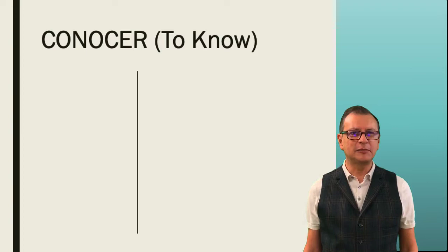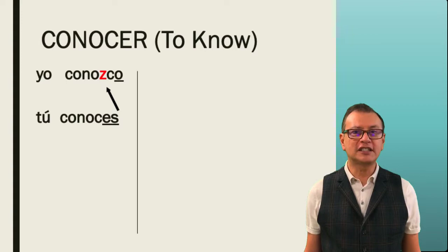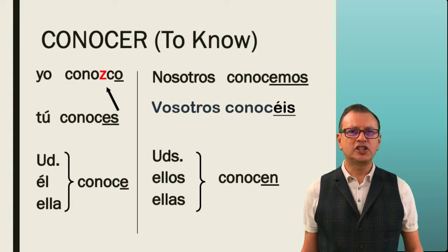The verb conocer is a little bit trickier, but I want you to take a look at the O and what happened to this verb. In the yo form you will have conozco. Conoces. Conoce. Conocemos. Conocéis. And conocen. The yo form is the only one that is tricky because you have to insert a Z in the conjugation. So it's easy, huh? Conozco.